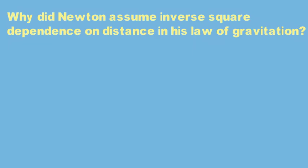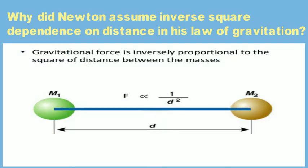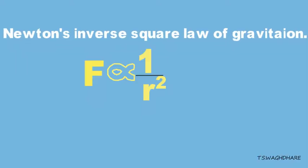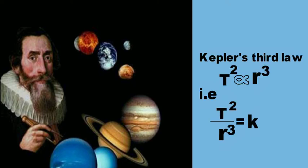But why did Newton assume inverse square dependence on distance in his law of gravitation? And how did he arrive at this inverse square law of gravitation? He was helped by Kepler's third law. Now, let's see how.